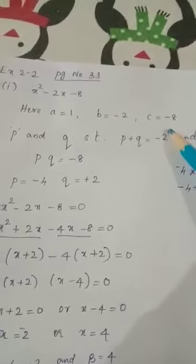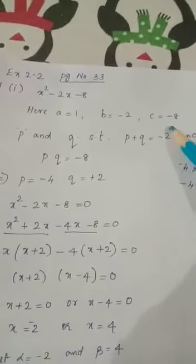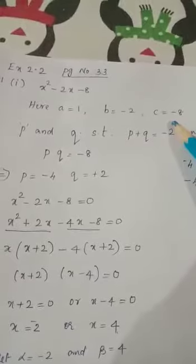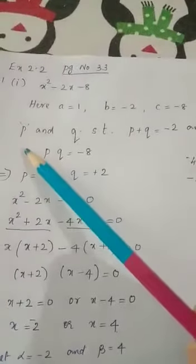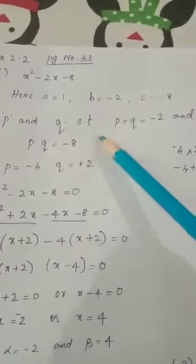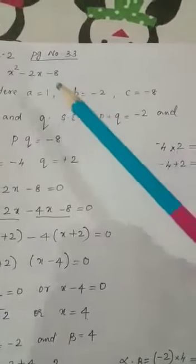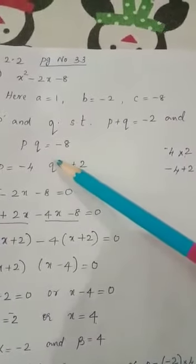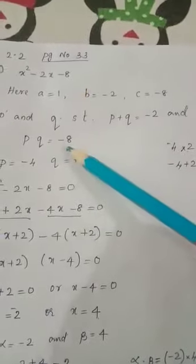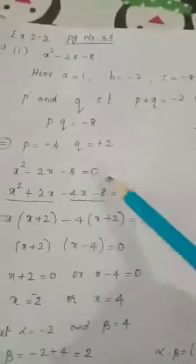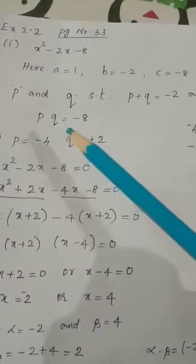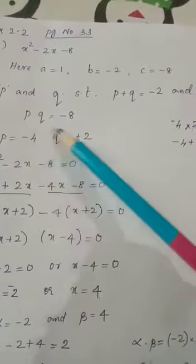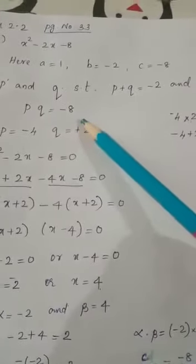The zeros are not given, so we have to find them using the splitting the middle term method. We need to identify two numbers p and q such that p plus q is equal to minus 2 and p into q is equal to minus 8.